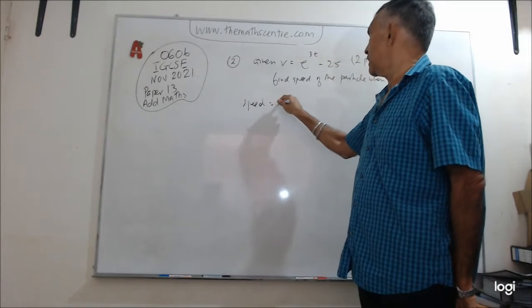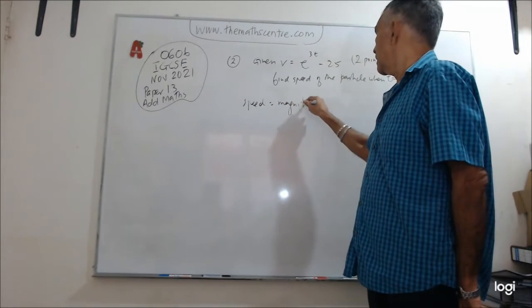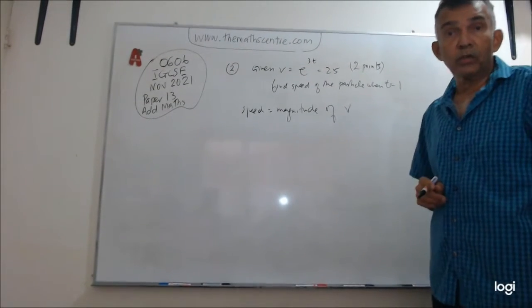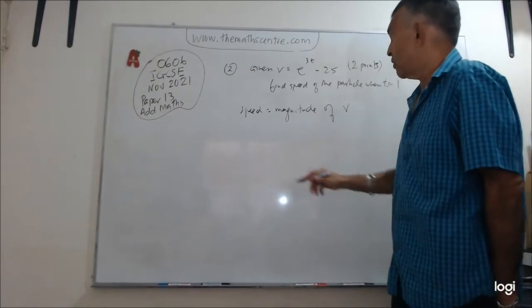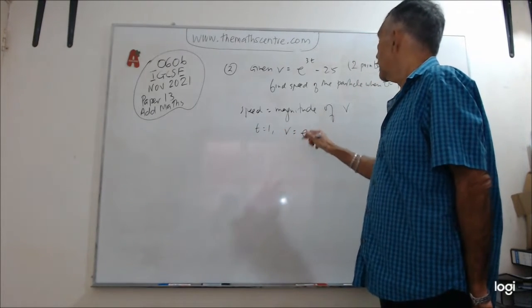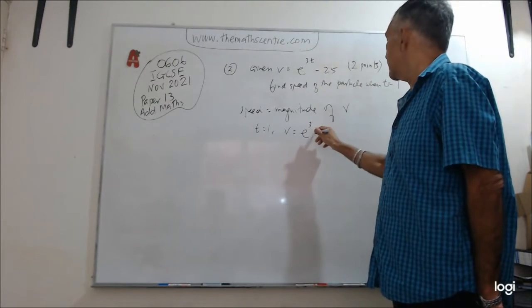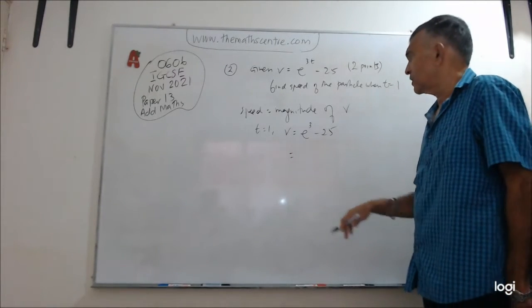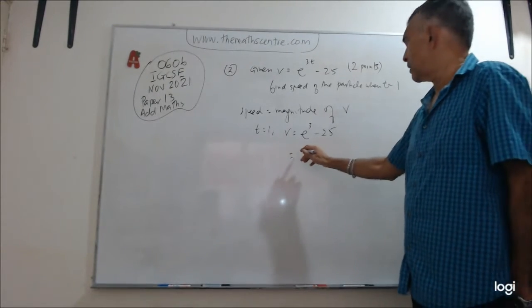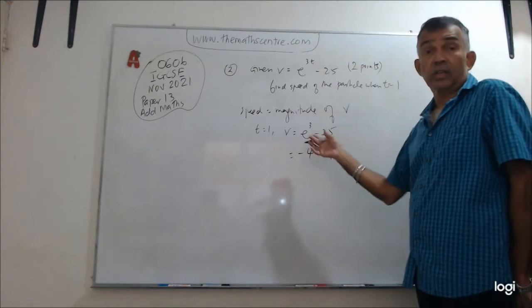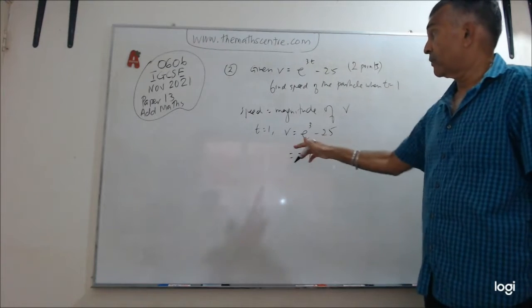Speed is the magnitude of the velocity. So when t is 1, v equals e to the 3 times 1, which is just e to the 3 minus 25. And when you use a calculator, you will get some number like negative 4.91 or something like that. Okay, you can use your calculator and work that out.